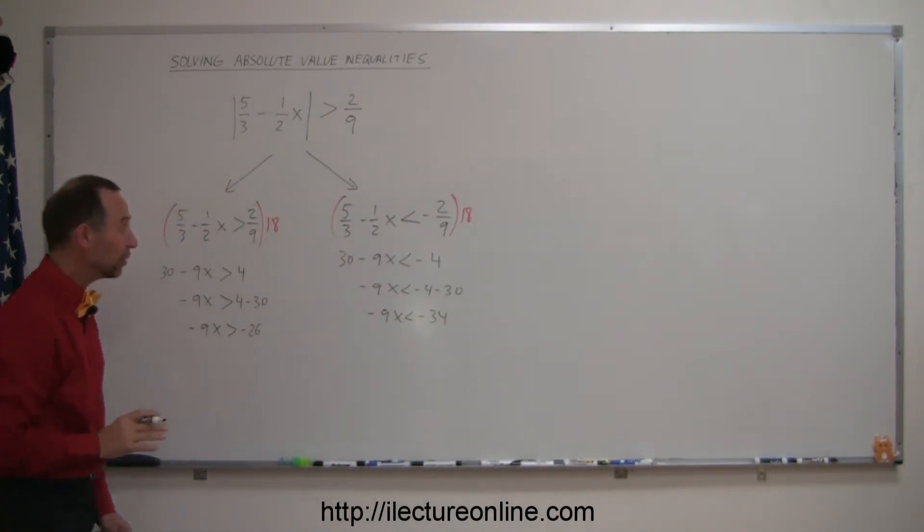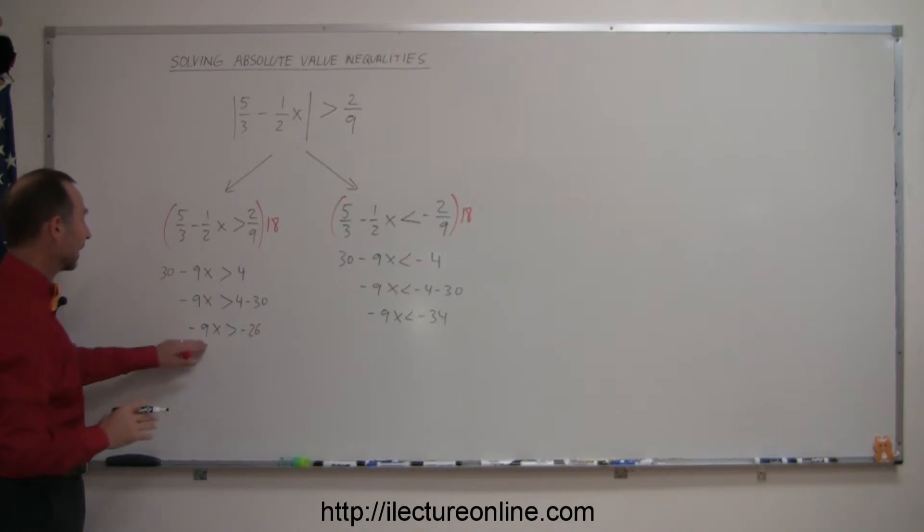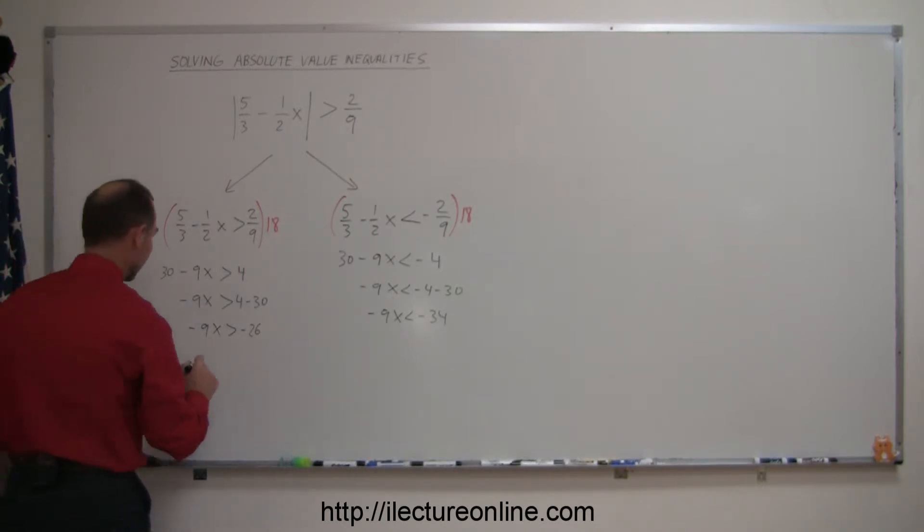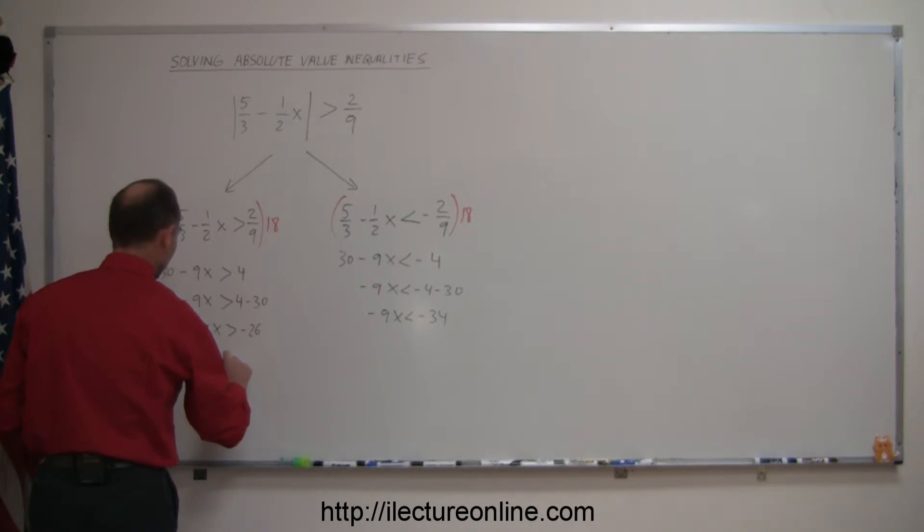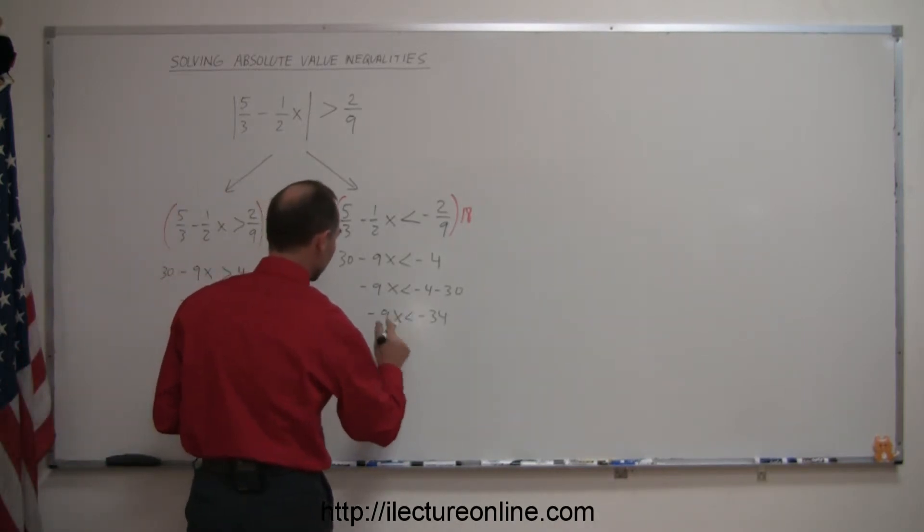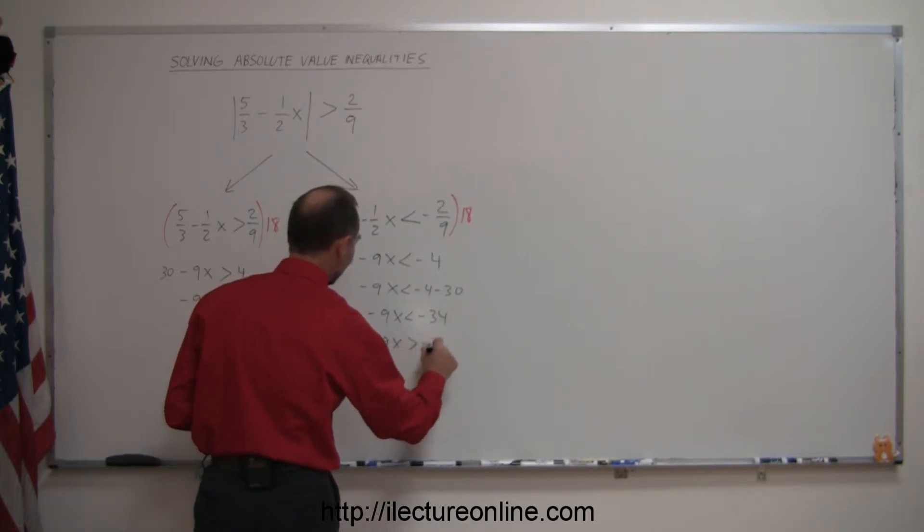And the last thing we do is divide both sides by negative 9. Now of course when we have an inequality and we divide by negative 9, we have to turn the inequality symbol around. So this becomes minus 9x less than minus 26 when we divide both sides by negative 9, and over here we do the same thing. We're going to turn the inequality symbol around.